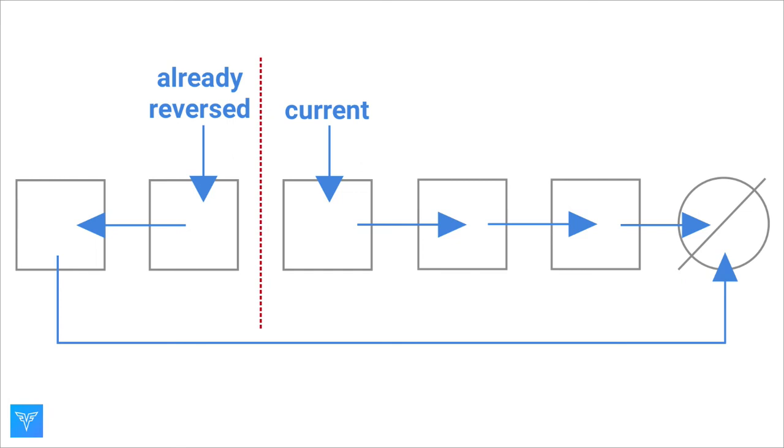We keep two pointers: current, which is the head of the forward-facing list, and alreadyReversed, the head of the reversed portion of the list. We can see that at an intermediate step in the process, the alreadyReversed and current nodes are nodes that were adjacent in the original list. This dotted line, which I call the frontier, separates the reverse part of the list from the forward part of the list.